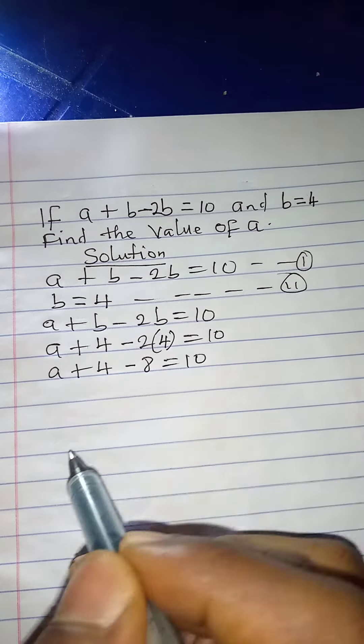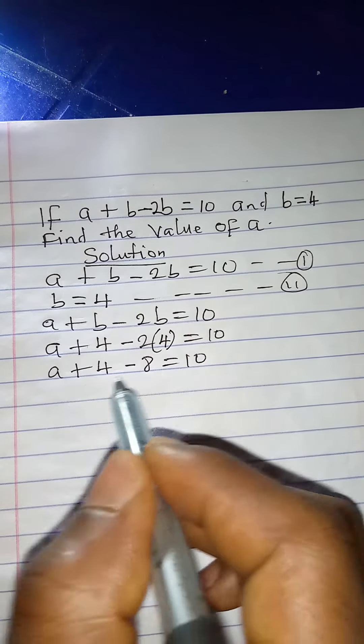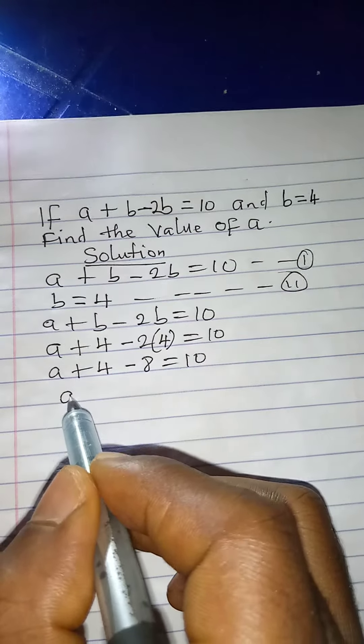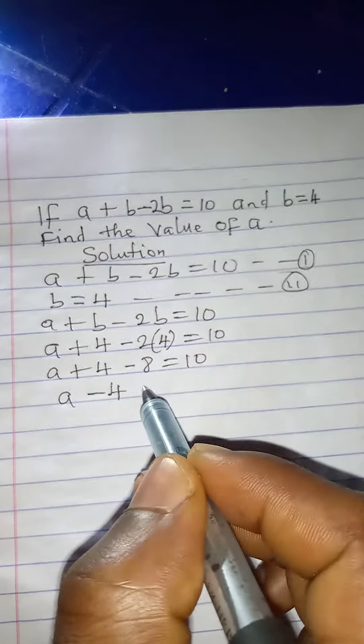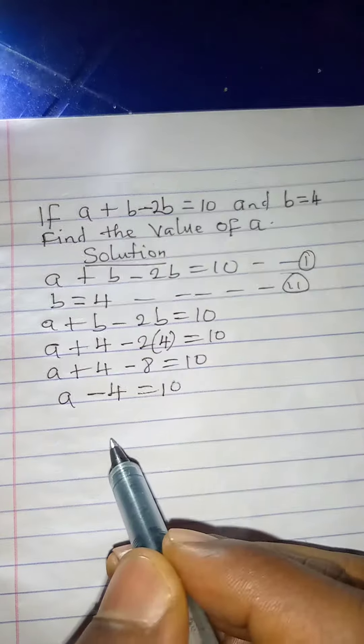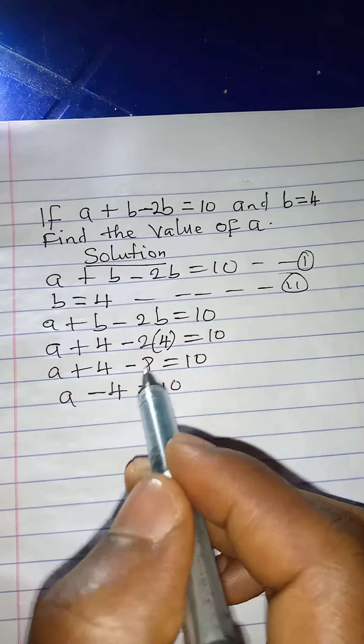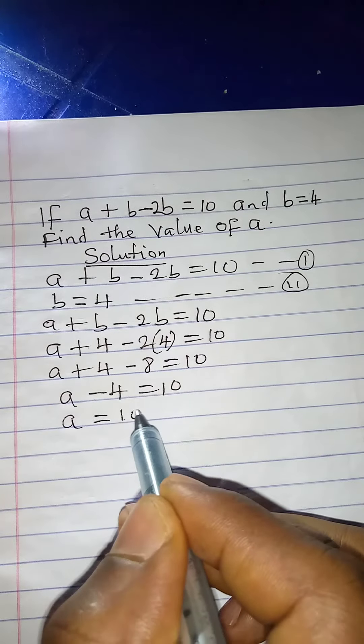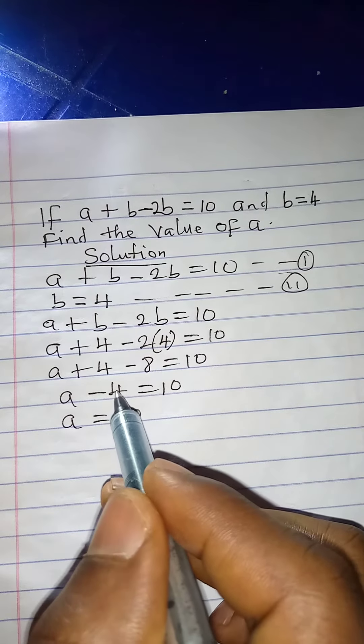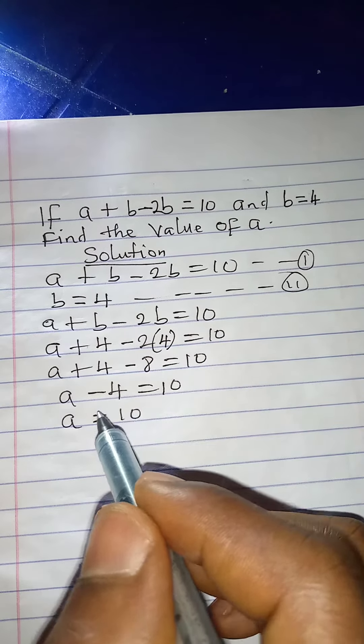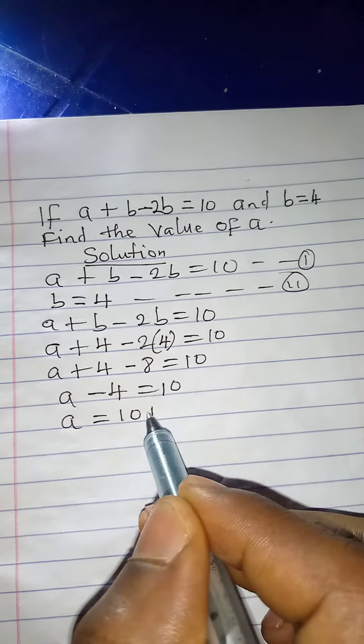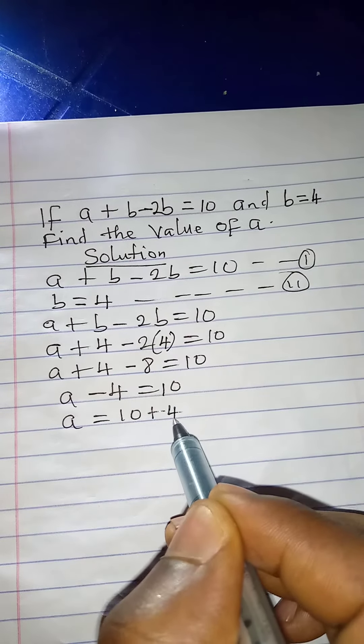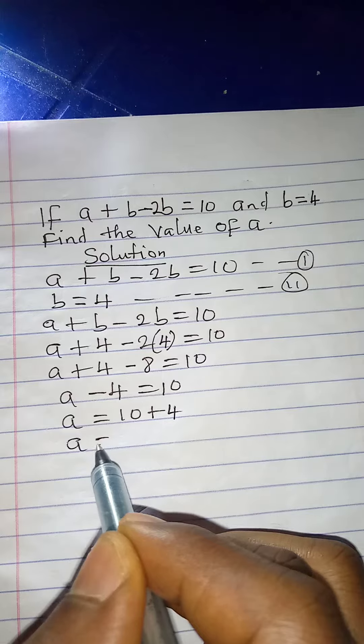Now I will work on this. This is going to be a minus 4 equals 10, because plus 4 minus 8 is minus 4. Then a is equal to 10 plus 4. I will add plus 4 to both sides, so it comes here to be plus 4.